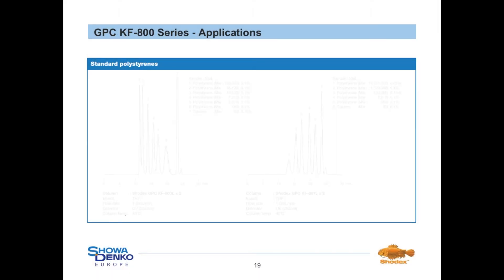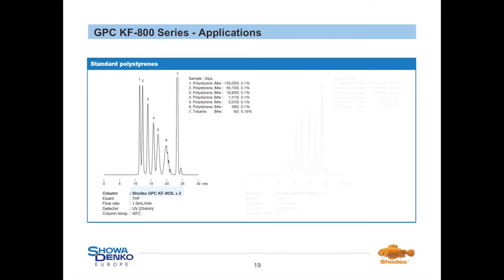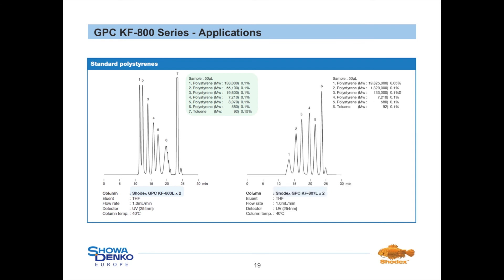The performance of the KF-800 columns is shown in this slide. Different polystyrene standards were tested over a wide molecular weight range. On the left side, a combination of two 803L columns leads to good separation of polystyrenes from 92 up to 133,000 Dalton with high resolution. On the right side, two 807L columns were combined to separate a polystyrene mixture between 92 and 19,825,000 Dalton — a nice separation with high resolution was obtained, confirming the good performance of mixed-gel columns over a broad range.